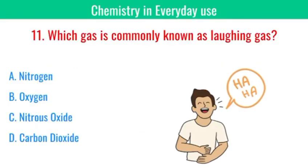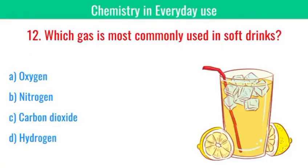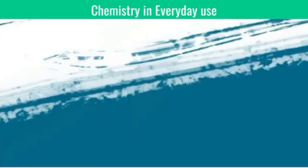Which gas is commonly known as laughing gas? The answer is nitrous oxide. Which gas is most commonly used in soft drinks? The answer is carbon dioxide. What is the chemical formula of baking soda? The answer is NaHCO3, sodium bicarbonate.